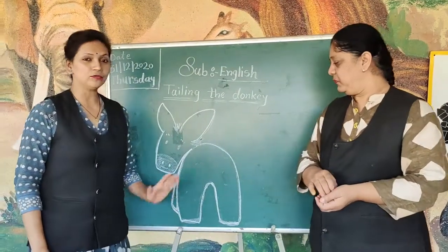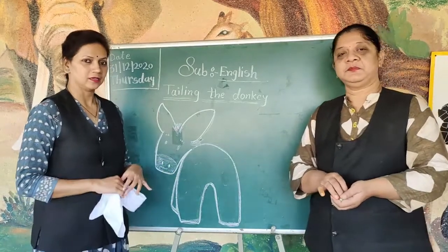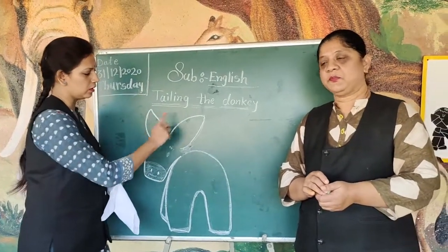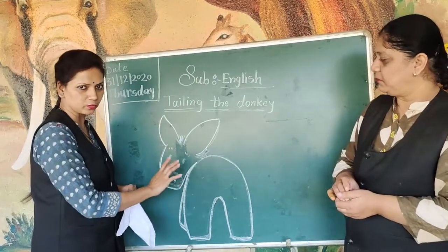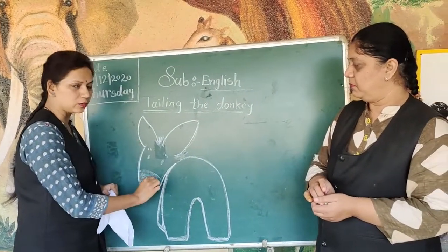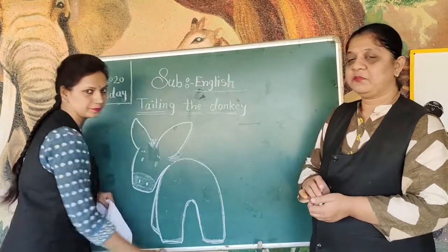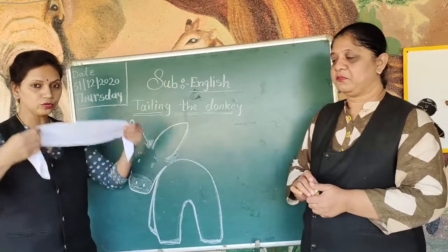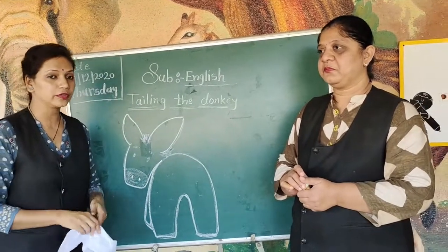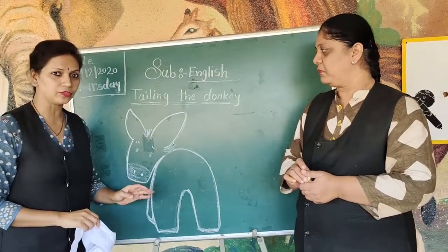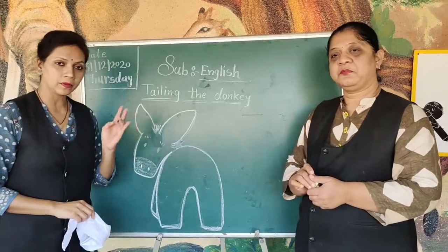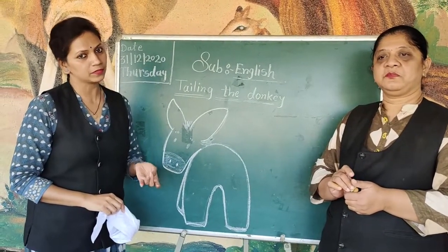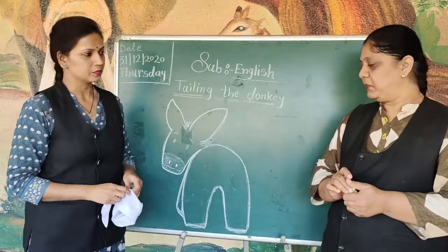Now I am going to tell you which game this is. What you have to do at home: you can draw any animal and you have to draw a tail on it. But before that, you have to close your eyes. You can play this game with your friend, with your mama, with your dada, or your sibling — your brother or sister.